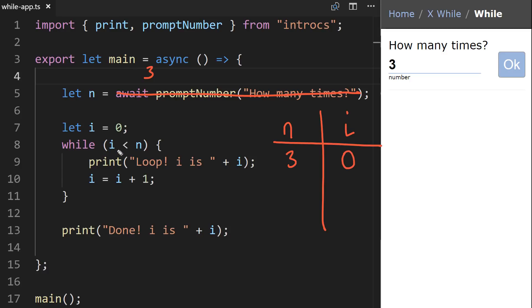When we reach this while loop, we see, we test, is i less than n? So i is 0. Is 0 less than 3? That is true. So we expect that print, the loop i is, we concatenate i, i is currently 0. We expect i is 0 to be printed out. And then we reach this increment statement where we're saying take the current value of i, that's 0, add 1 to it, that's 1, and store it back in i. So i is no longer going to be 0, it's going to be 1.